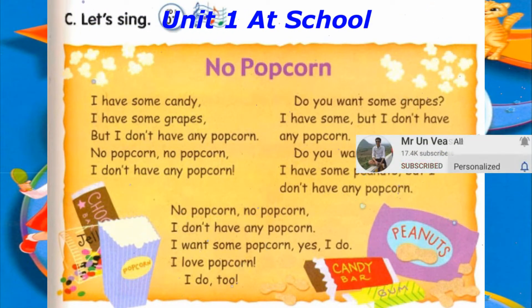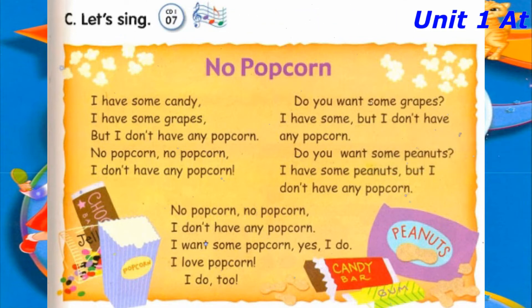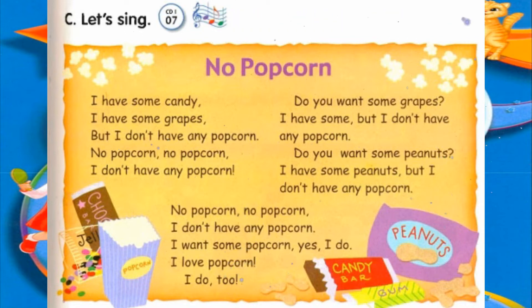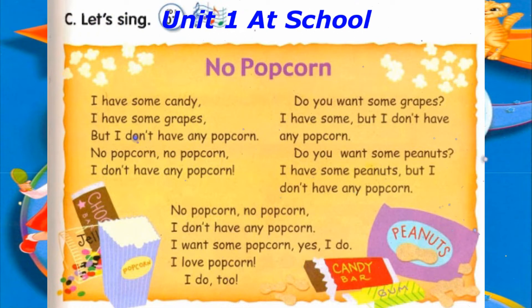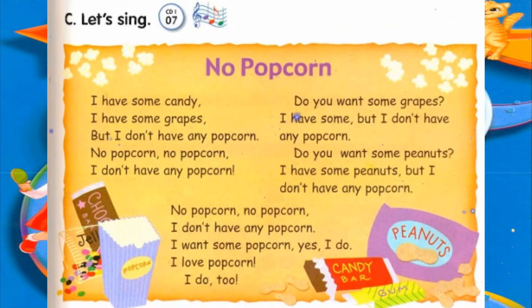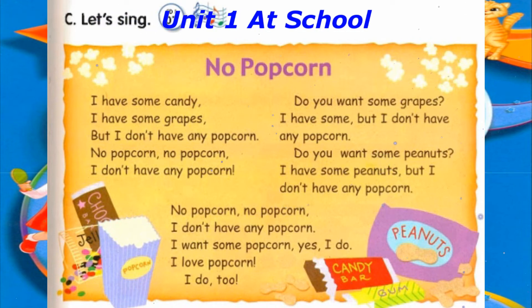Do you want some grapes? I have some peanuts. But I don't have any popcorn. Do you want some peanuts? I have some peanuts. But I don't have any popcorn. No popcorn. No popcorn. I don't have any popcorn. I want some popcorn. Yes, I do. I love popcorn. I do, too.